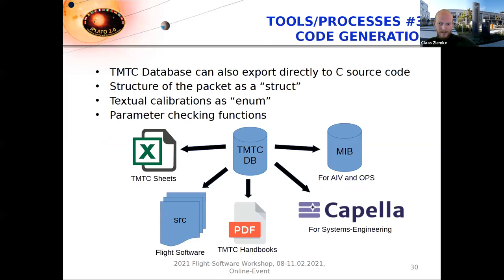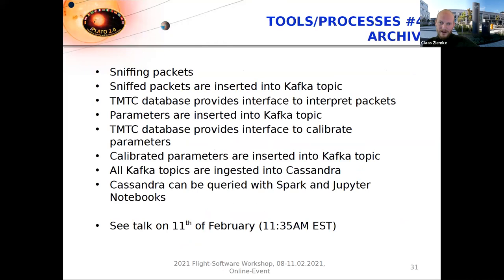The TM/TC database can also export C source code used for the Fast DPU onboard software — things like TM/TC packets as structs, textual calibrations as enums, and parameter checking functions. The TM/TC database is also connected to our data archiving tool, which can sniff packets and archive them, and these can later be queried with Spark and Jupyter notebooks. I also want to point to a second talk we have on the morning of the 11th of February.